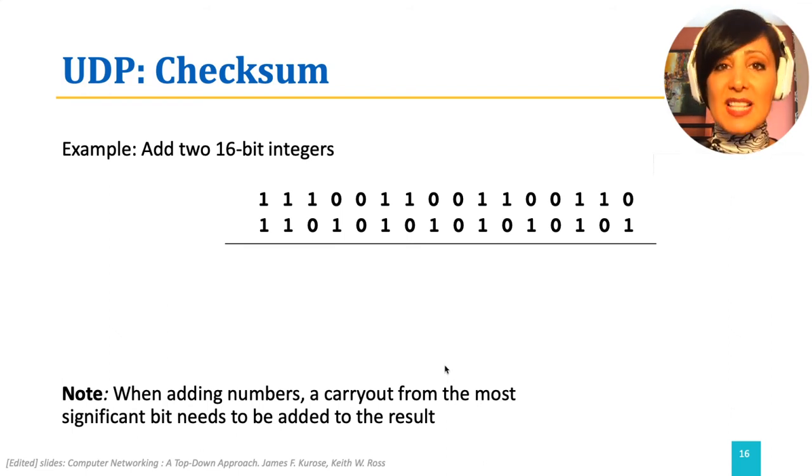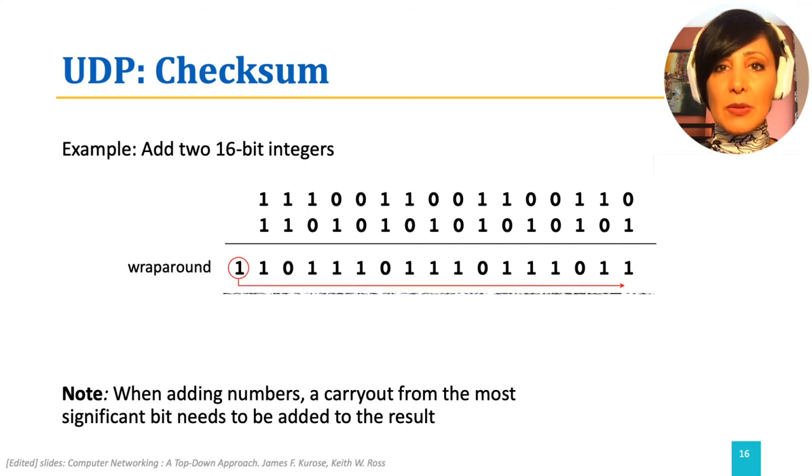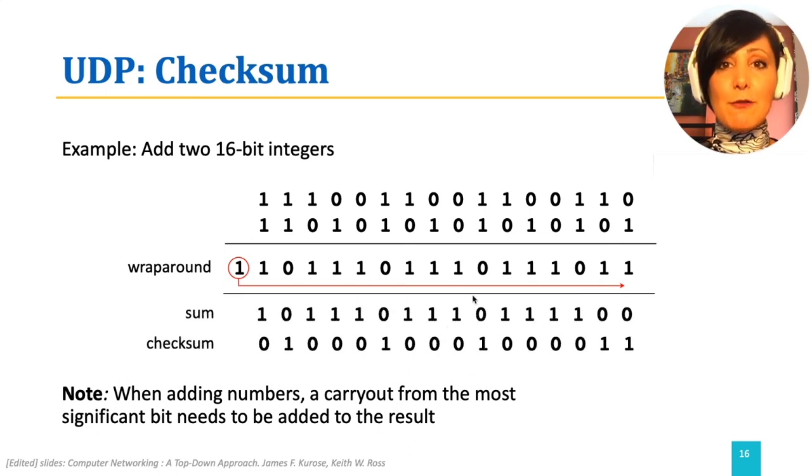Let's see bitwise add of two words and computation of the checksum value for them. First, we add the bits starting from the least significant bit. The carryout of the summation from the most significant bit is wrapped around to the least significant bit, yielding the sum. And computing the once complement yields the final checksum.